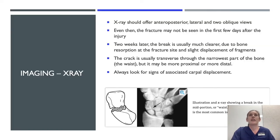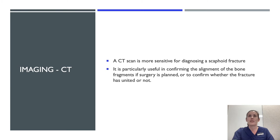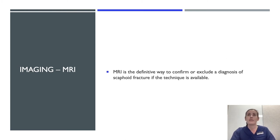For imaging, X-ray should offer anteroposterior, lateral, and two oblique views, but even then the fracture may not be seen in the first few days after injury. Two weeks later the break is usually much clearer due to bone resorption at the fracture site and slight displacement of fragments. The crack is usually transverse through the narrow part of the bone, also known as the waist, but may be more proximal or distal. Always look for signs of associated carpal displacement. CT scan is more sensitive for diagnosing a scaphoid fracture, particularly useful for confirming alignment of bone fragments if surgery is planned or to confirm whether the fracture is united. MRI is the definitive way to confirm or exclude a diagnosis of scaphoid fracture if the technique is available.